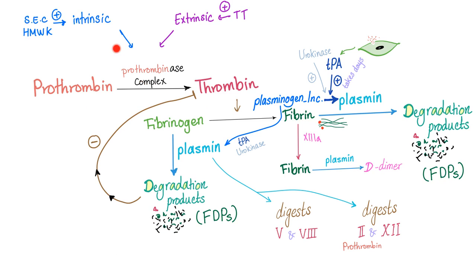Here's the complete story of fibrinolysis. You have the intrinsic or the extrinsic coagulation pathway — prothrombin into thrombin, fibrinogen into fibrin. Now we have the clot. Stabilize the clot by factor 13, and now we have stabilized fibrin.